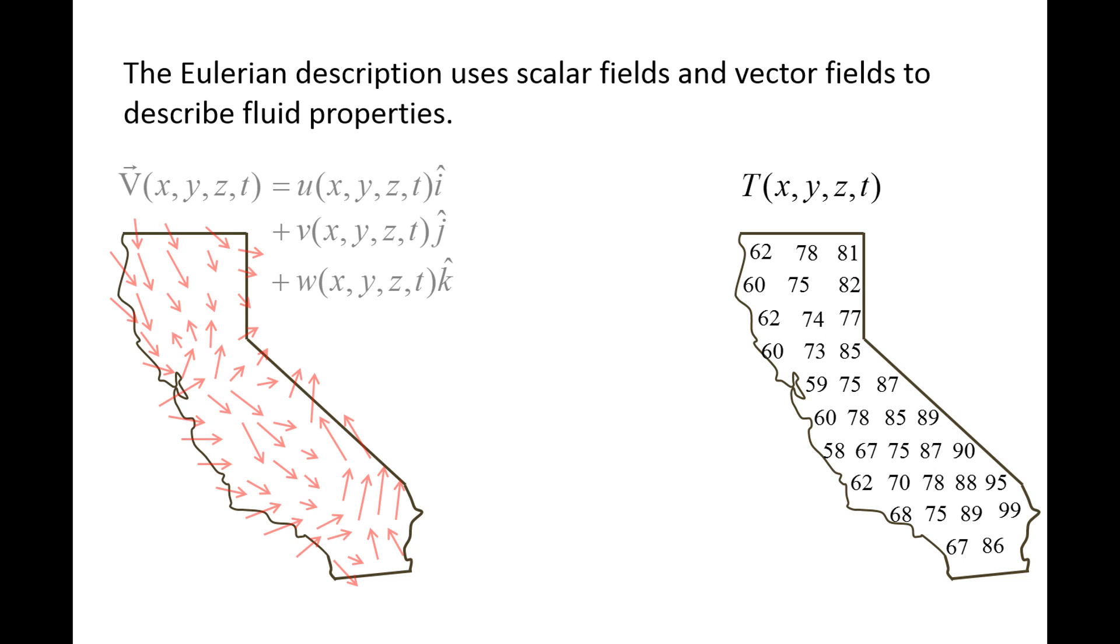On the left, we see wind velocities across California at a specific time. Wind is reported for various locations, not for individual fluid particles which move through space. Wind can be thought of as a vector field, and its components, lowercase u, lowercase v, and lowercase w, all can vary with position and time.